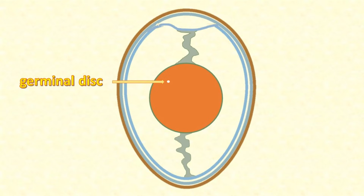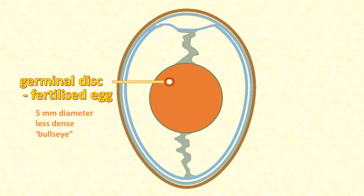If the egg has been fertilised, this germinal disc is the very beginning of the chick embryo. While the egg is still inside the hen on its way to being laid, the germinal disc begins to grow as the cells divide and multiply. A few hours after the egg is laid, there are about 50,000 cells in the germinal disc. It's no longer a small, uniform, dense, white dot. It's now about 5 millimetres in diameter, and it looks less dense, softer somehow, as well as larger. The yolk immediately around it looks a bit darker. The whole effect is a bit like what people call it — a bullseye.